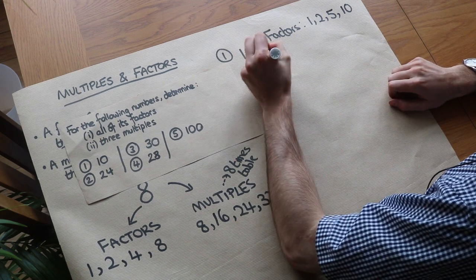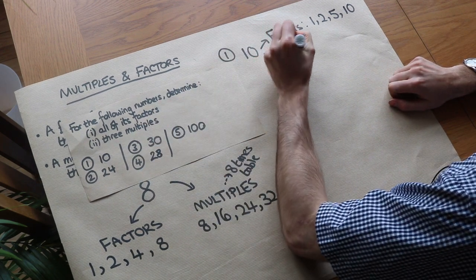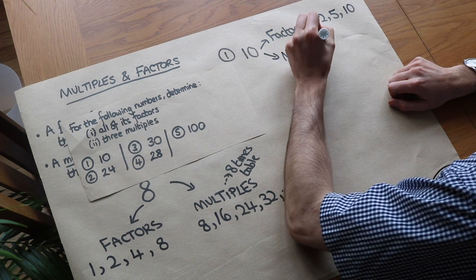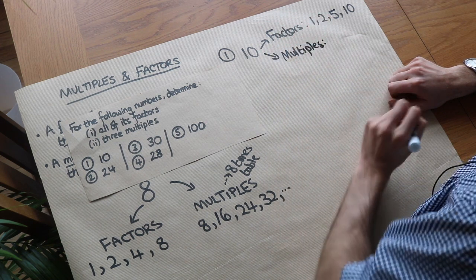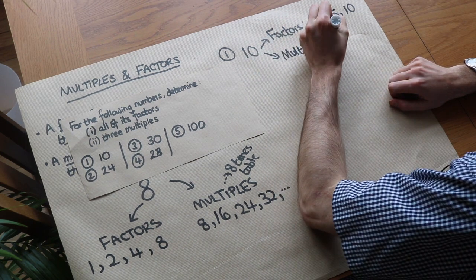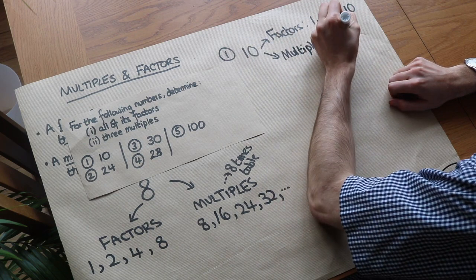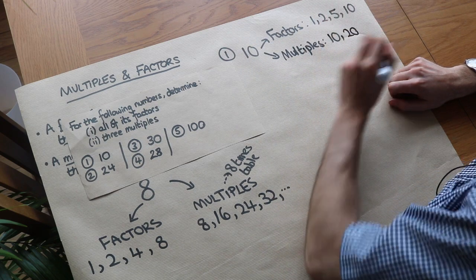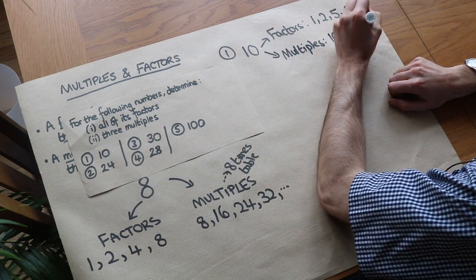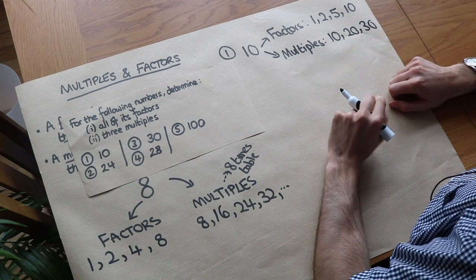What about multiples? We'll just find 3 multiples since there are infinitely many and we can't list all of them. We could have 1 lot of 10, which is 10; 2 lots of 10, which is 20; and 3 lots of 10, which is 30. We can just think of numbers in the 10 times table.